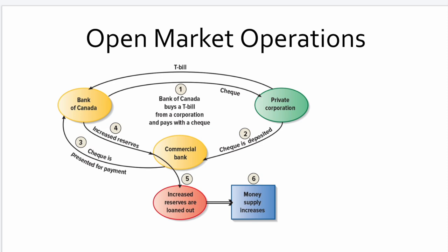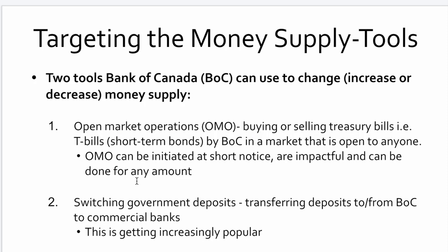Open market operations work as follows: the Bank of Canada buys T-bills from private corporations, pays with a check, and the check is deposited into commercial banks. That puts money into the commercial banks, which increases their reserves and, as we've seen with the multiplier, effectively allows them to increase the amount of money in supply.